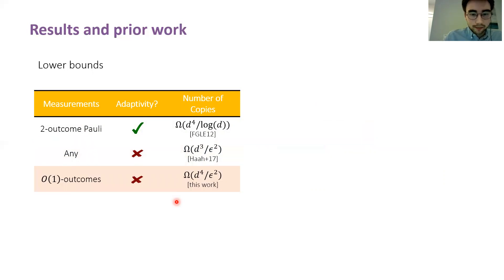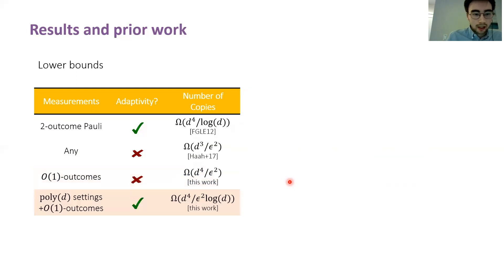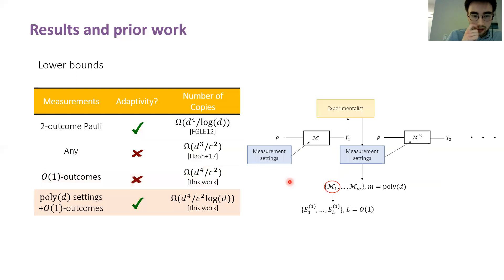First, we show that using non-adaptive measurements that are limited to a constant number of outcomes, you require at least d-to-the-four copies of the state. In particular, this implies that the folklore Pauli tomography algorithm is optimal in a certain sense. We next show a lower bound that generalizes the results of Flammia and others, which holds for any measurement strategy with a number of settings that grows polynomial in the dimension of the state, so long as those measurements have a constant number of outcomes.